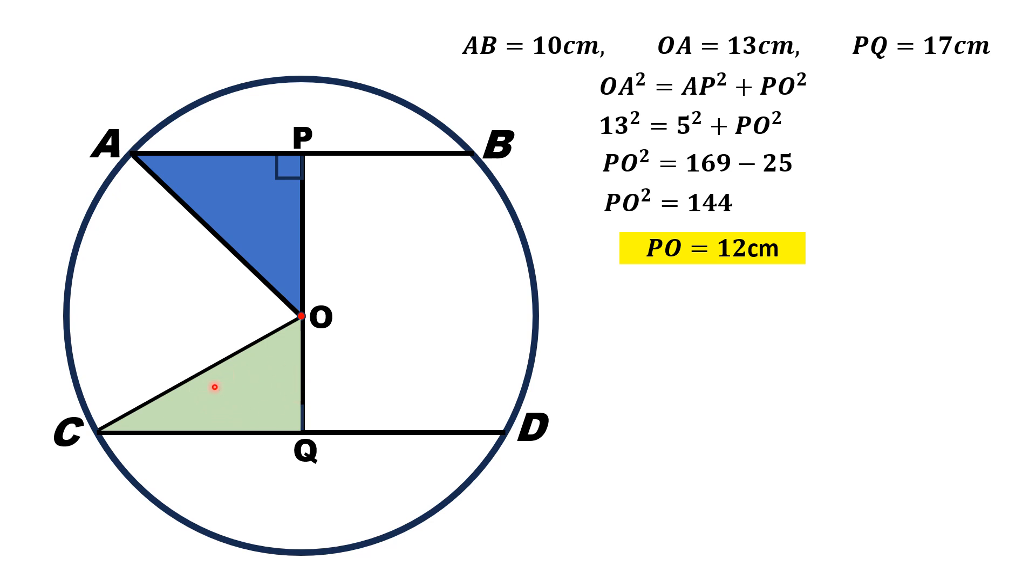Using the Pythagorean theorem on this right triangle OQC, we will get OC squared is equal to OQ squared plus QC squared. That is equal to 13 squared equals 5 squared plus QC squared. Since PQ is 17 and PO is 12, so OQ is 5 units.